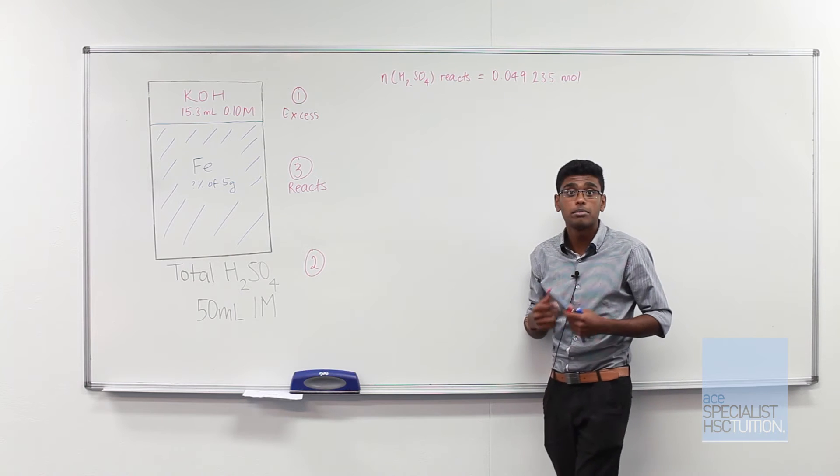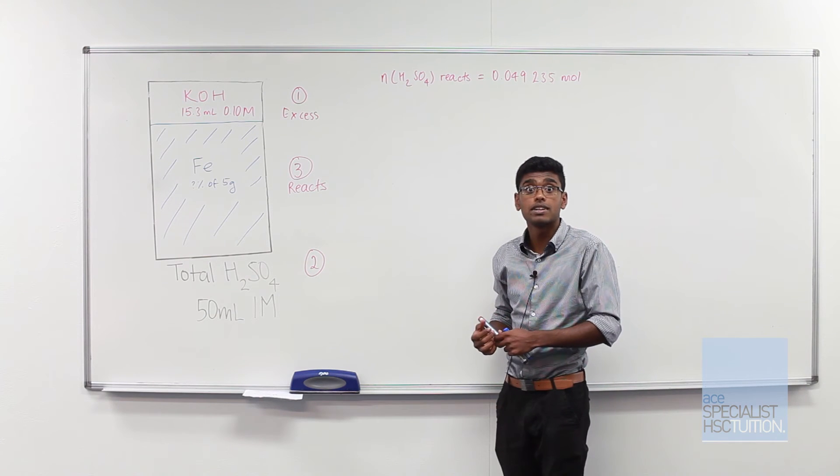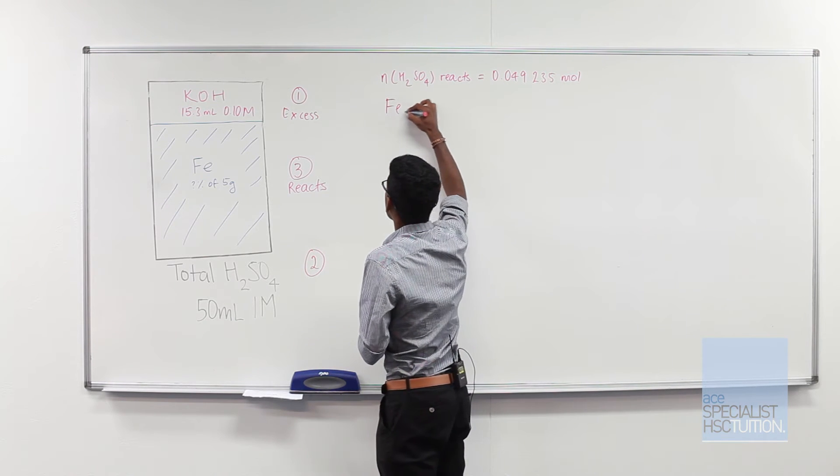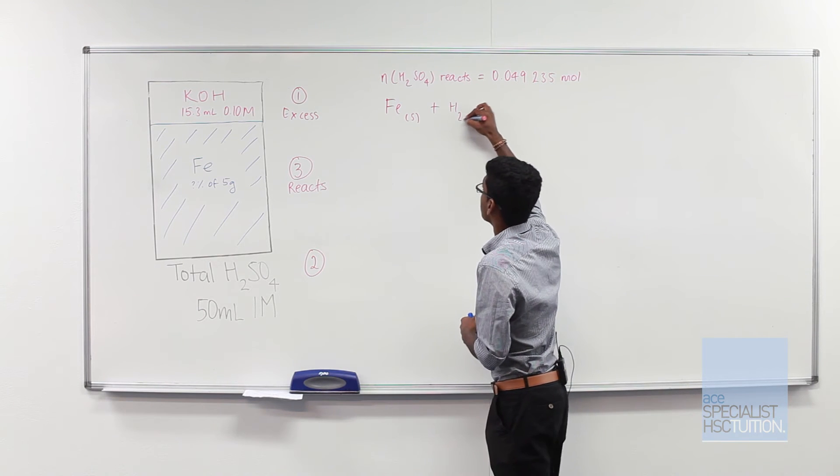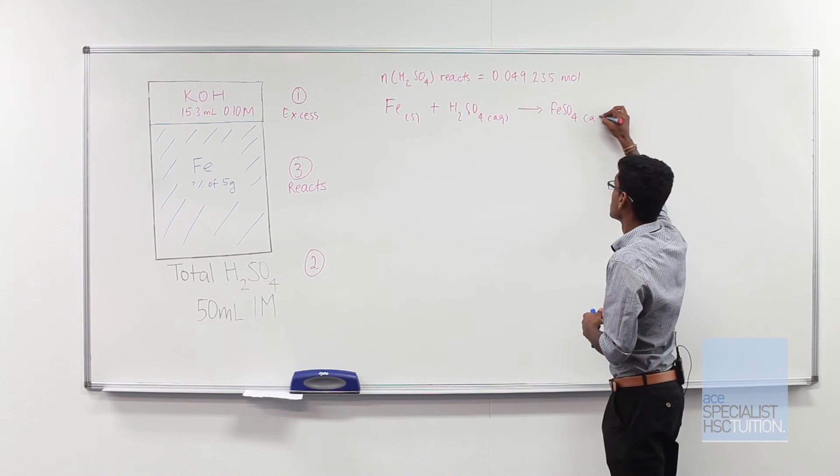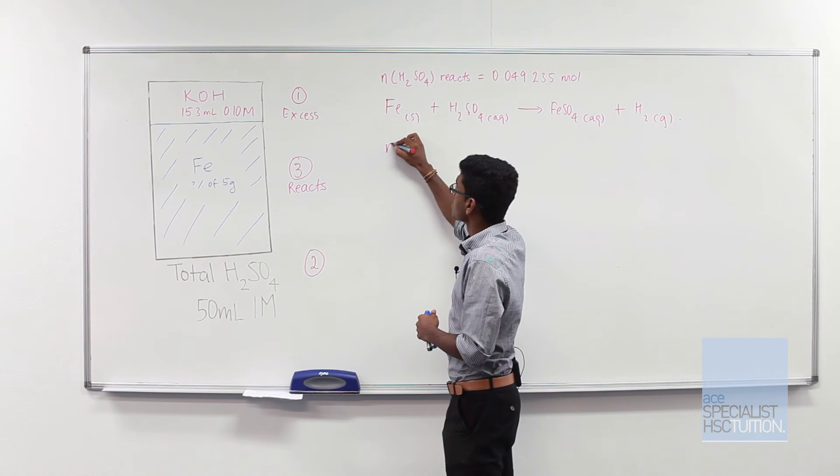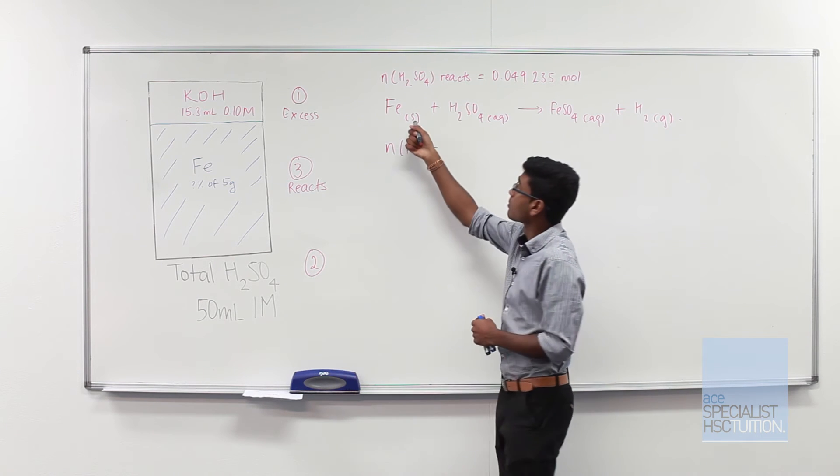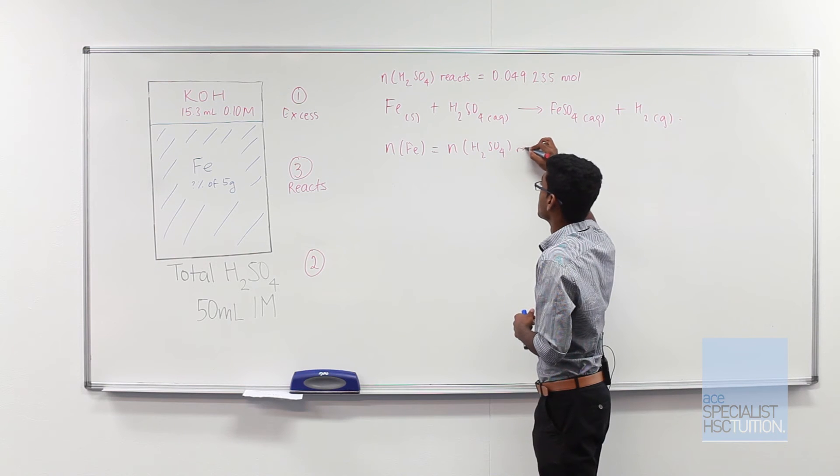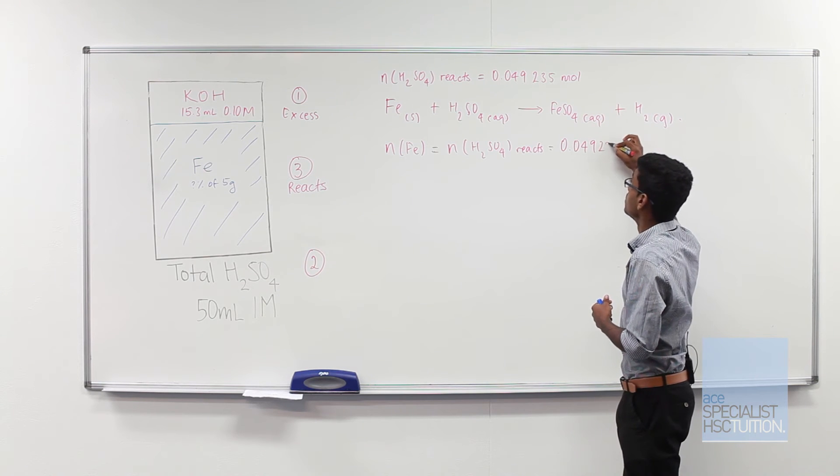So we've worked out the total number of sulfuric acid moles that have actually reacted with our iron. So now we can work out how many moles of iron reacted with our sulfuric acid. So let's write another equation to represent this reaction. We've got iron metal reacting with sulfuric acid to form a salt, iron sulfate and hydrogen gas. We can work out the number of moles of iron using our molar ratio which is one is to one to say that it's equal to the number of moles of sulfuric acid which reacts, which we calculated was 0.049235 moles.